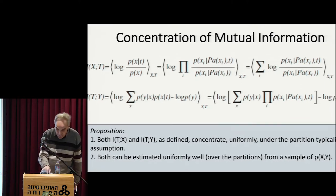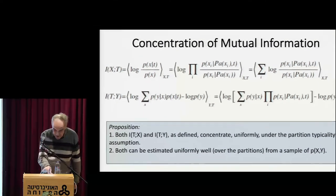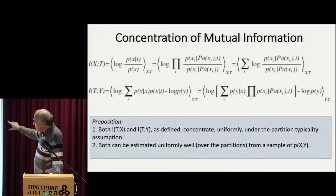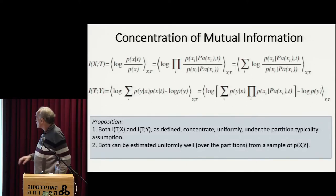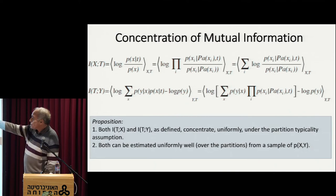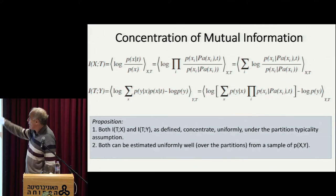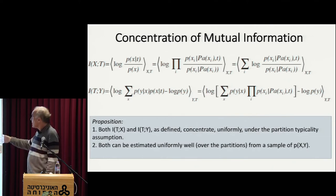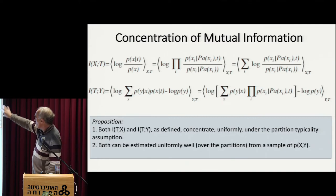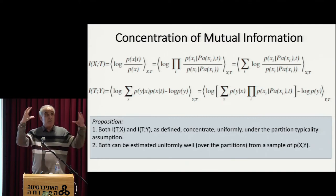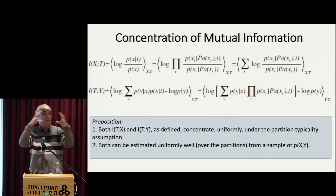This is the only crucial assumption that I'm making: that my patterns have this typicality factorization. If this is true, then under these assumptions — this is not a proof, just an intuition of the proof — both IXT and ITY will concentrate, because eventually it will look like a log of a product of a lot of independent terms, and for all the usual reasons, this will average nicely. That's the main reason why we see this concentration in the plane.